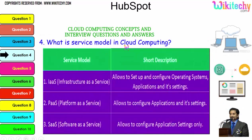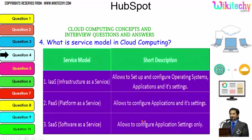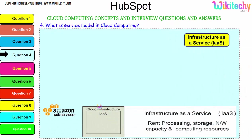The question is: what is the service model in cloud computing? The major service models are three. Infrastructure as a Service (IaaS) allows you to set up and configure the operating system, applications, and settings — you're given a server and can install whatever operating system you want. Platform as a Service (PaaS) allocates you a specified operating system where you can install any applications. Software as a Service (SaaS) gives you a software environment where you can configure application settings.